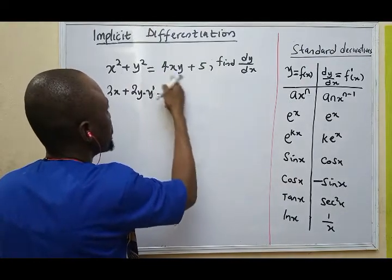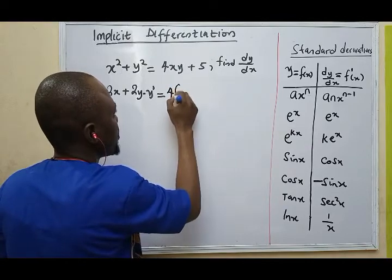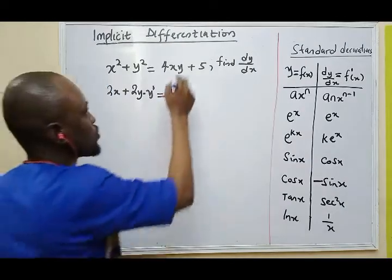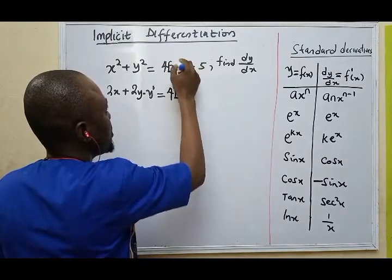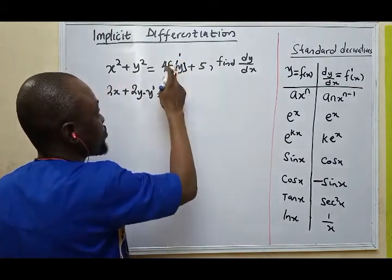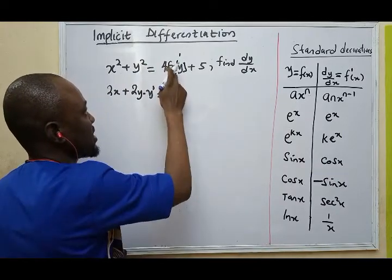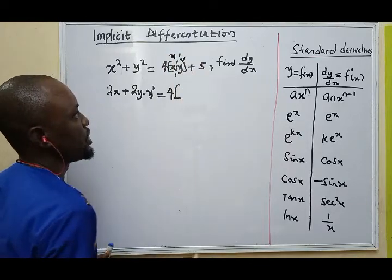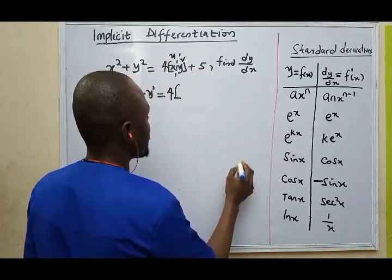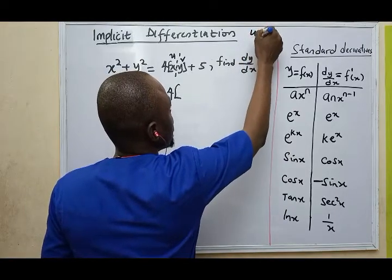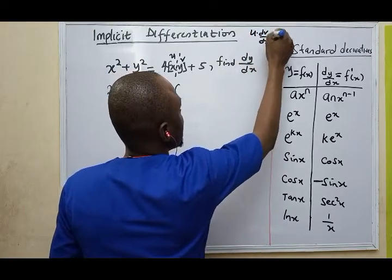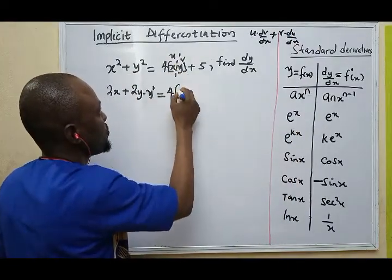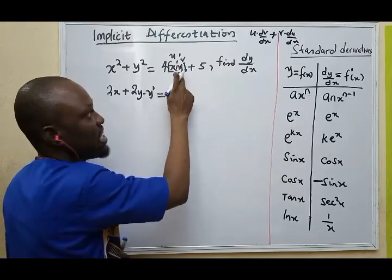Then, this becomes a product. I'm going to write 4 into... So, I'm going to solve this with product rule because I have two functions as product, x and y. I'm going to tag this as u or tag this as v. If you recall the product rule, this is the formula: u dot dv/dx plus v dot du/dx.